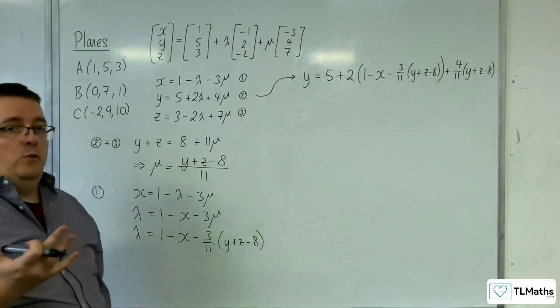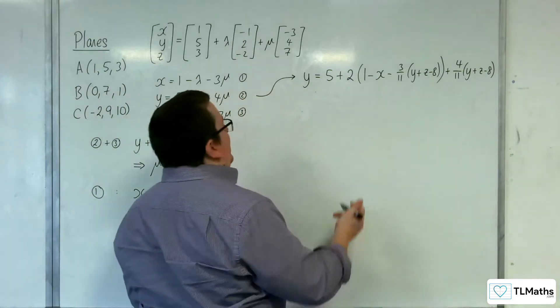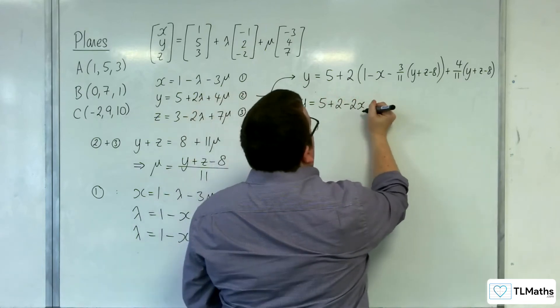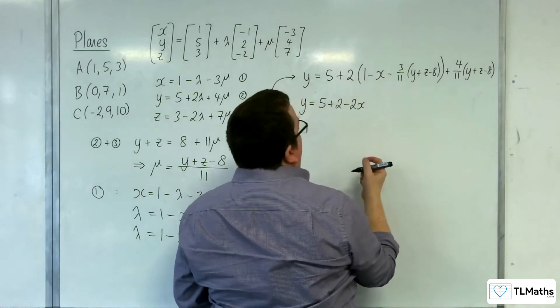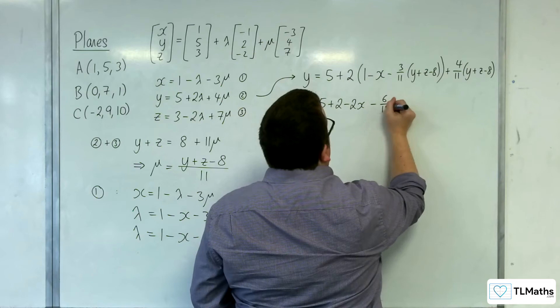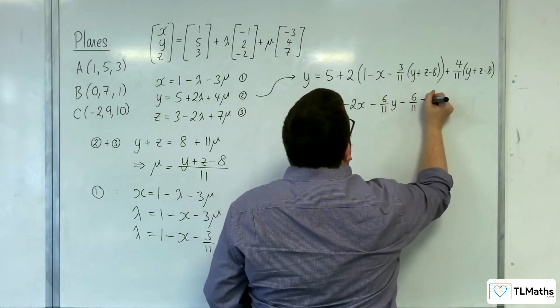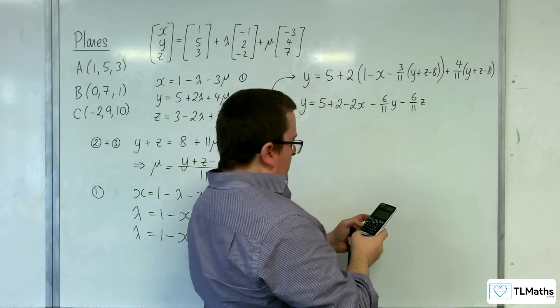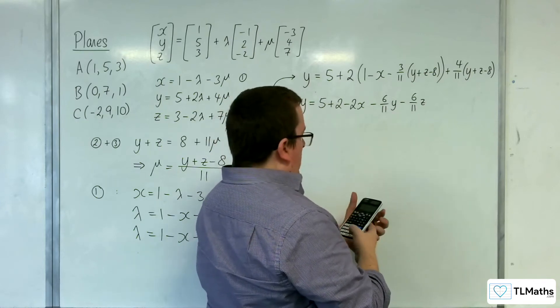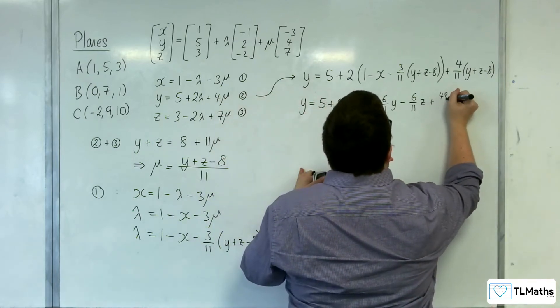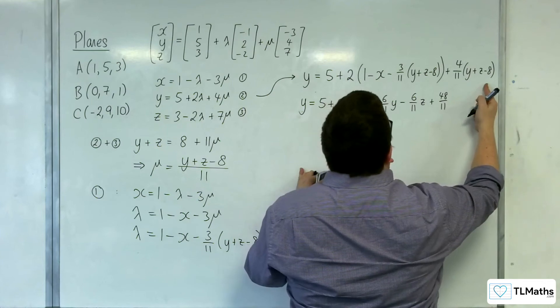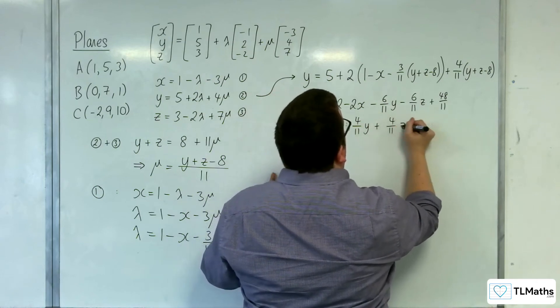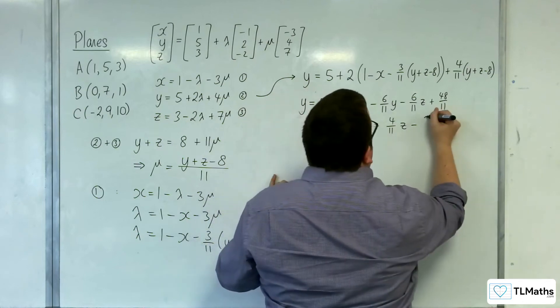So what I want to do is I want to multiply this out, make this look a little bit better. So y equals 5 plus 2, take away 2x, then we're going to have 2 lots of 3 elevenths, so 6 elevenths. So minus 6 elevenths y minus 6 elevenths z. Then we've got 2 times minus 3 elevenths times minus 8. So 48 elevenths, so plus 48 elevenths. Then we've got this bit here. So I'm just going on to the next line. So 4 elevenths y plus 4 elevenths z take away 8, 16, 32 elevenths.